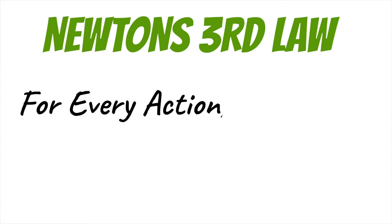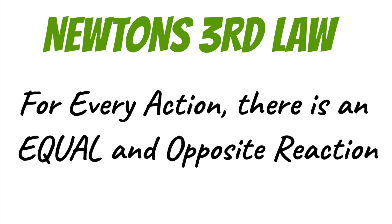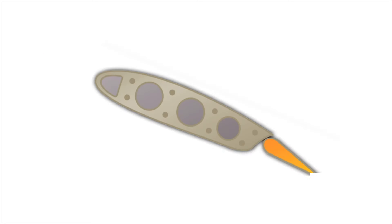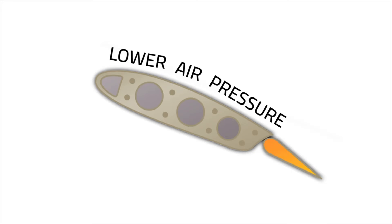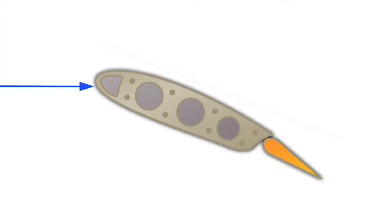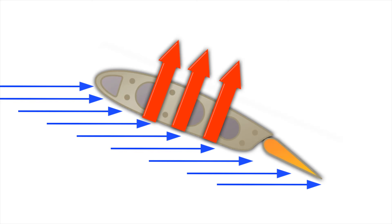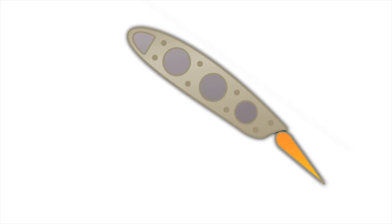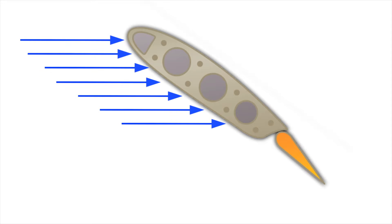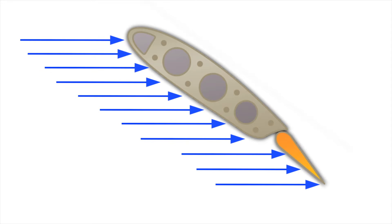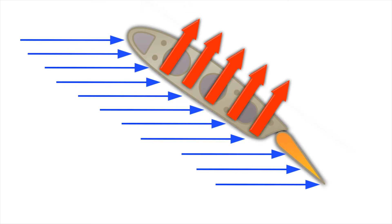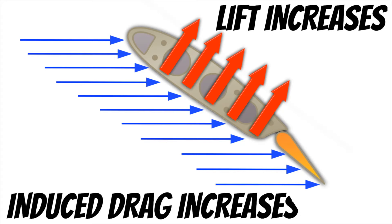Another thing that creates lift is Newton's third law, which says that for every action there's an equal and opposite reaction. Bernoulli's principle creates lift by creating lower air pressure on the upper surface of the wing, but in addition, air can strike the lower surface of the wing and push it up. When relative wind hits the lower surface of the wing, it pushes the wing up and back. When we raise the wing to a higher angle of attack, there's more surface area on the bottom exposed, allowing relative wind to push the wing up and back even harder. So as we increase angle of attack, lift increases — but drag increases as well.